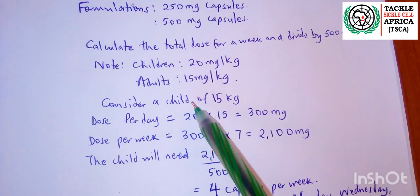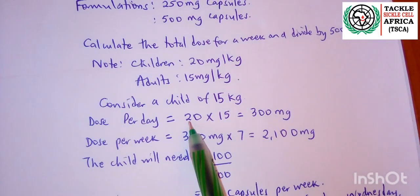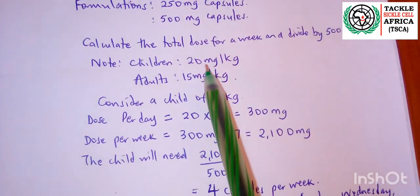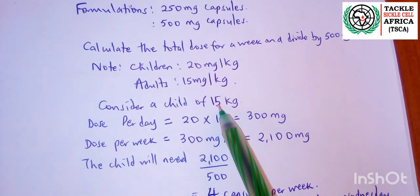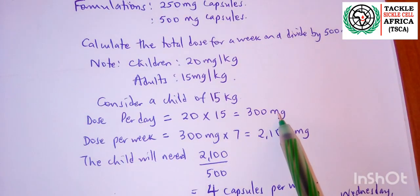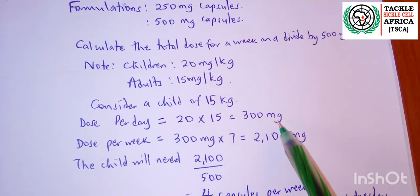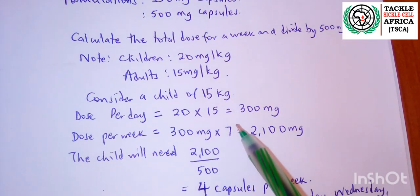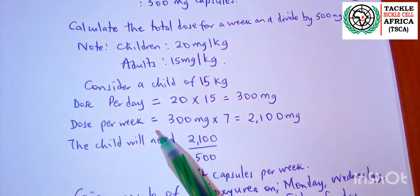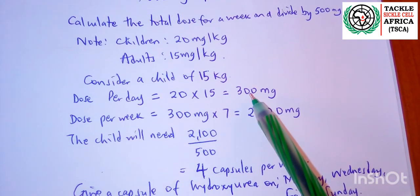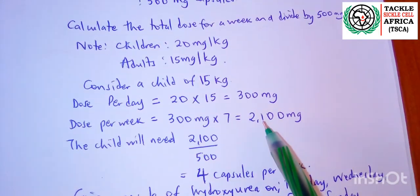Let's consider a child of 15 kilograms. To get the dose per day, we take 20 milligrams per kilogram and multiply by the child's weight of 15 kilograms, which gives us 300 milligrams. We don't have a 30 milligram capsule, so we first calculate the total dose the child will take in a week by multiplying 300 milligrams by 7 days.